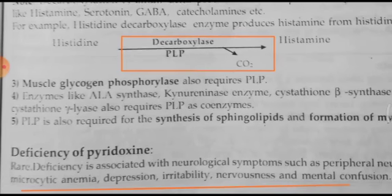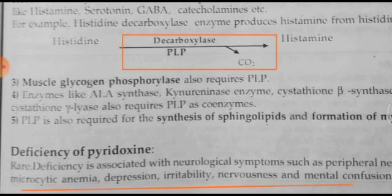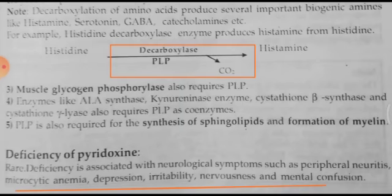The deficiency of pyridoxine is associated with neurological symptoms like peripheral neuritis, microcytic anemia, depression, irritability, nervousness and mental confusion. Because this vitamin is related to nervous system functioning, the deficiency of pyridoxine is going to affect nerve-related functions.